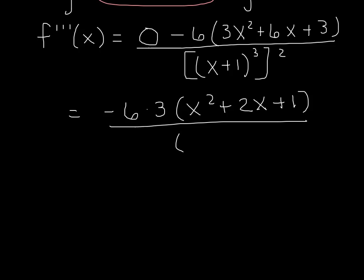All over x plus 1 to the third squared, which gives us x plus 1 to the sixth. So now putting together my negative 6 times 3, I get negative 18. And if I factor x squared plus 2x plus 1, I notice that's x plus 1 times x plus 1, or more simply put, x plus 1 squared.